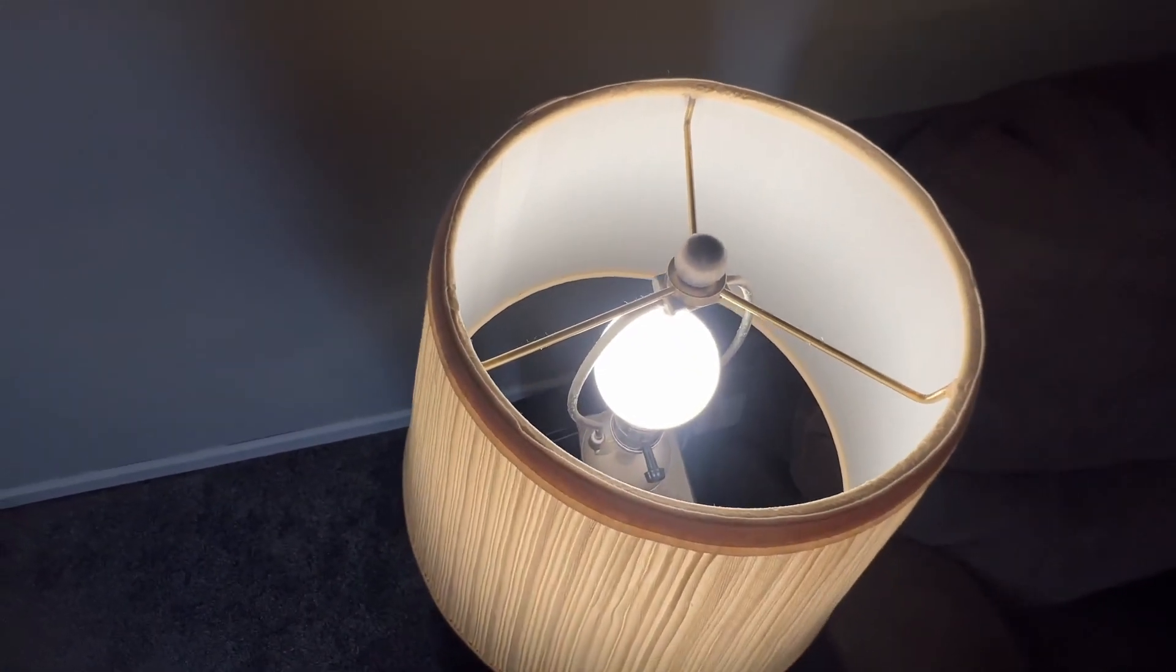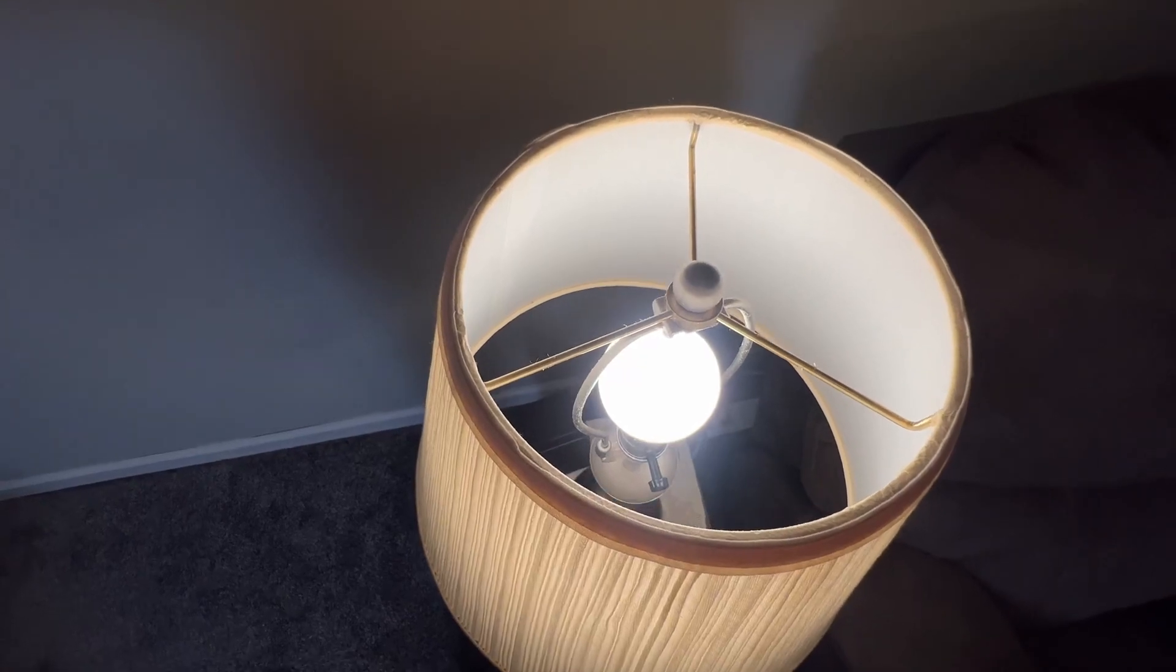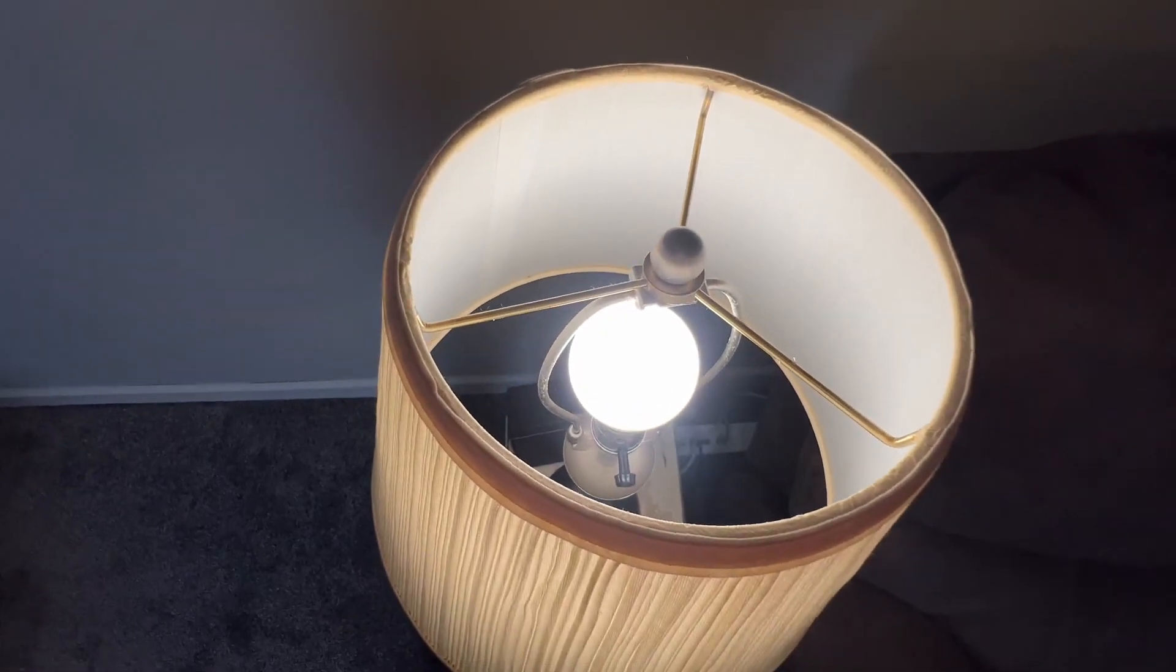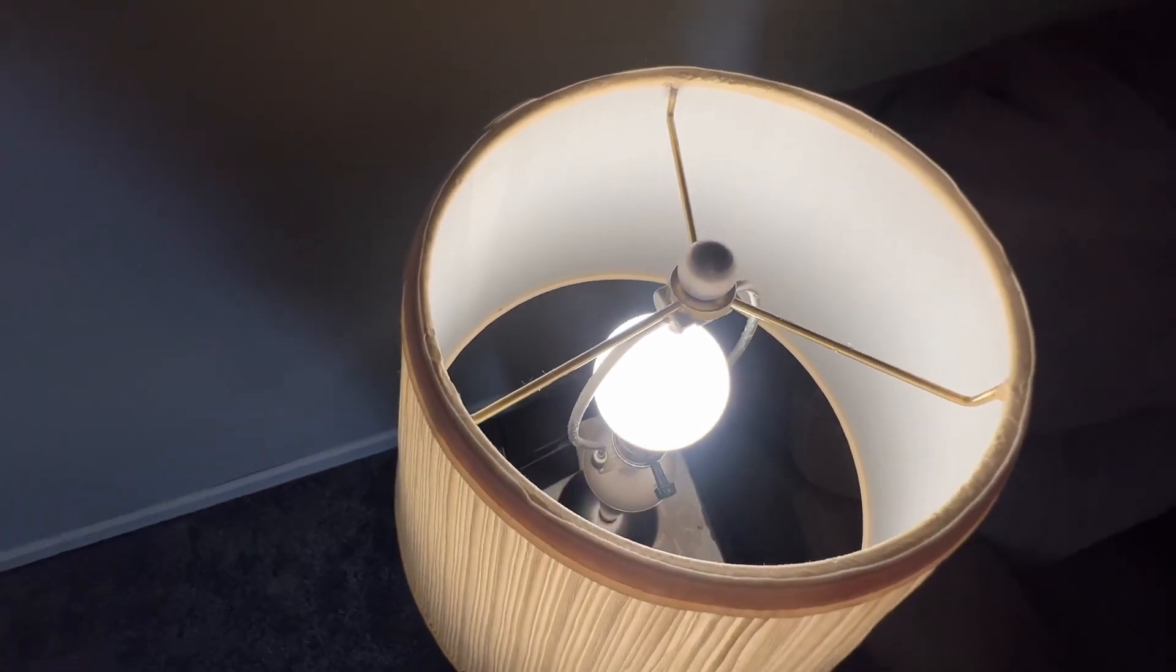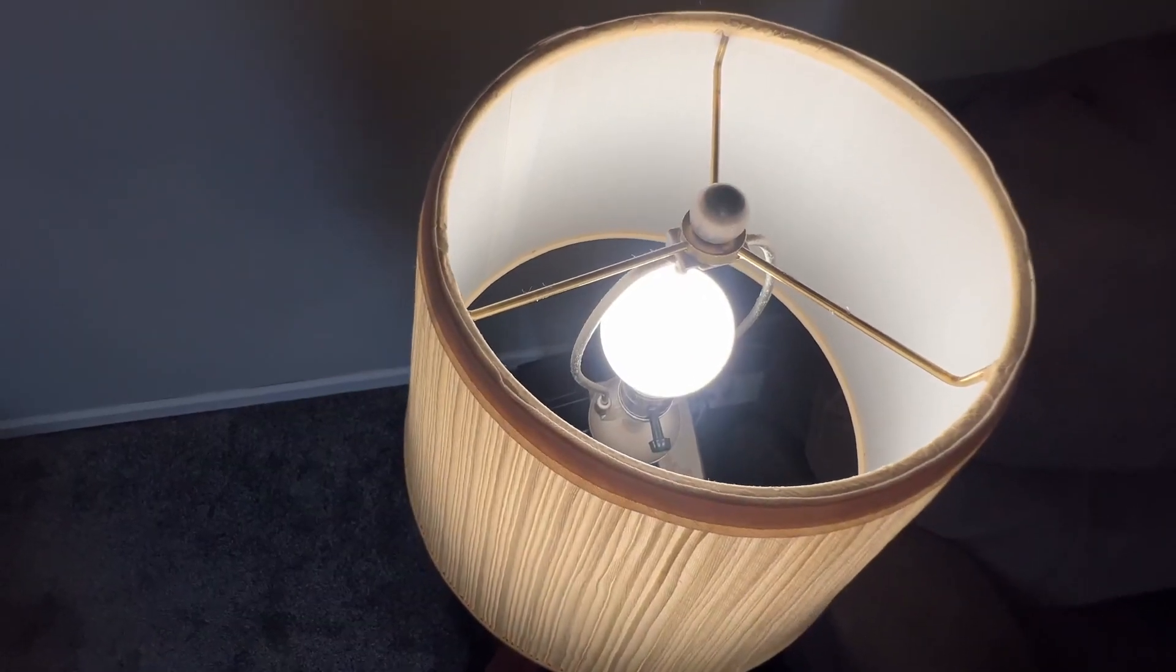It's RGB, so once you have it connected via the app, you can link that with your Amazon Alexa app. We have a Dot down here, so I can be like, Alexa, turn off the basement light.